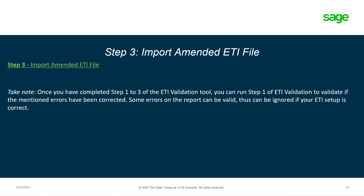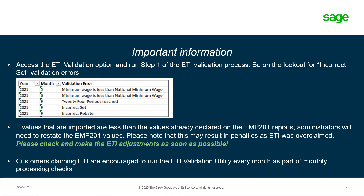Once you have completed steps one to three on the ETI validation tool, you can run step one of the ETI validation process again. Be on the lookout for validation errors — for example, an incorrect set. If the values that are imported are less than the values already declared on the EMP 201 report, the administrator will need to restate the EMP 201 values. Please note that this may result in penalties as the ETI was over claimed. Please check and make the adjustments as soon as possible.